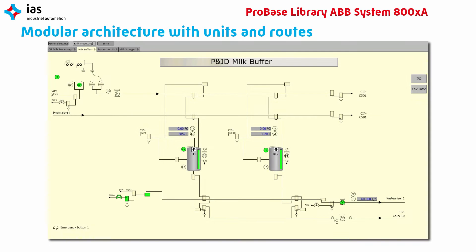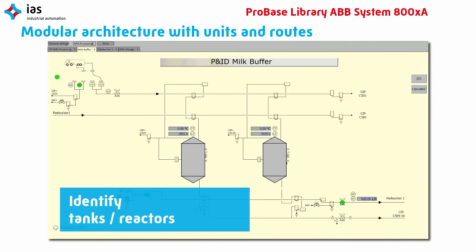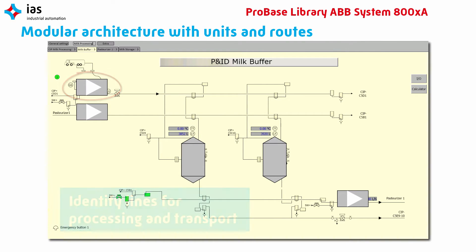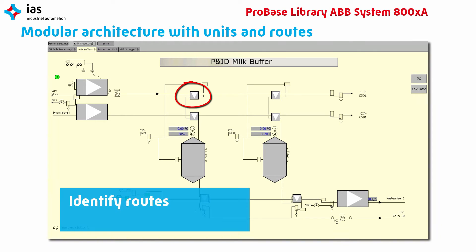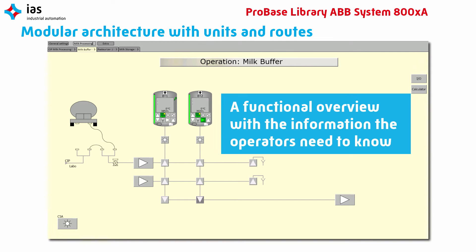Let's have a look at a small process to explain the ProBase architecture. First, start with the P&ID. In this P&ID, identify all of the functional objects like tanks. Identify the lines used for processing and transport. And identify the routes for your source and destination plan. At the end, your operator screen will look like this — a functional overview with all the information the operators need to know.